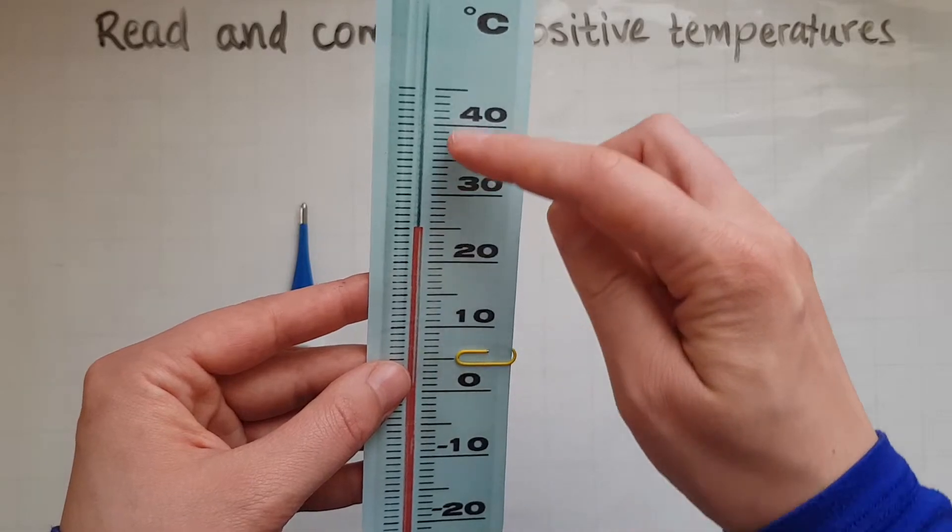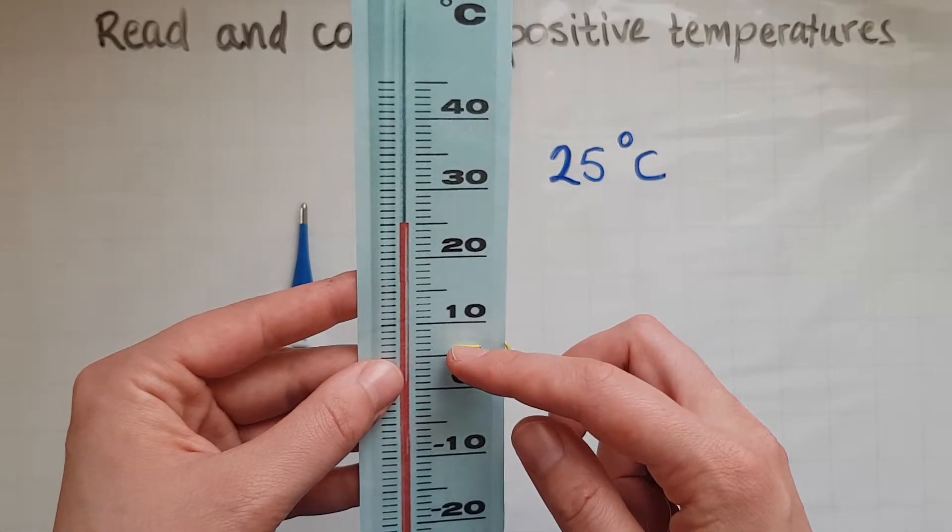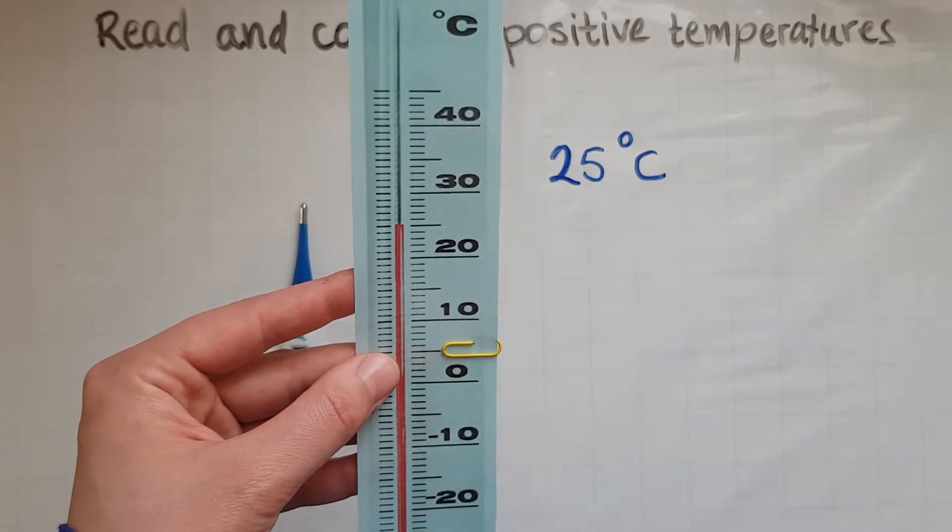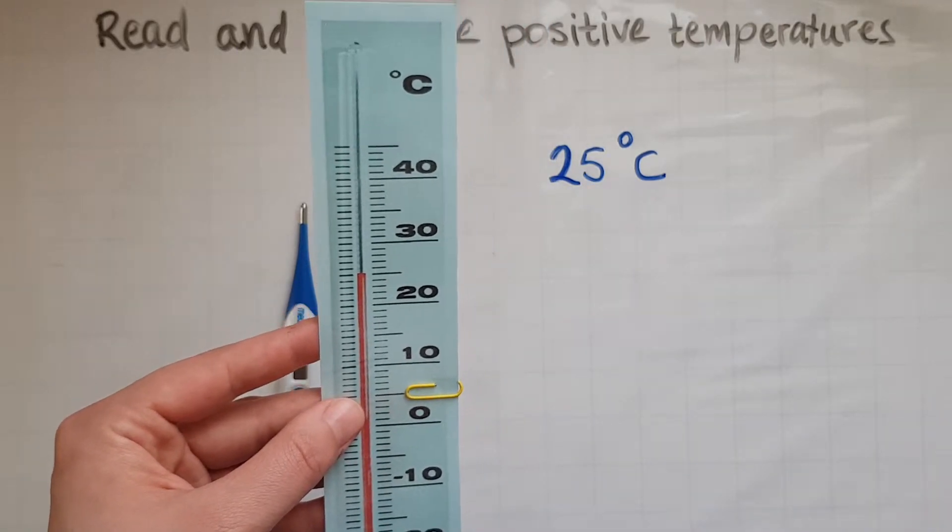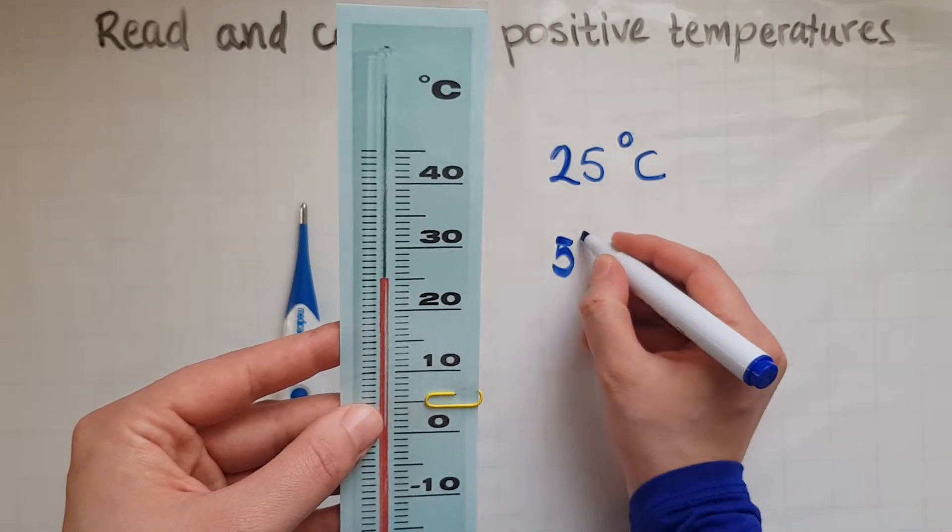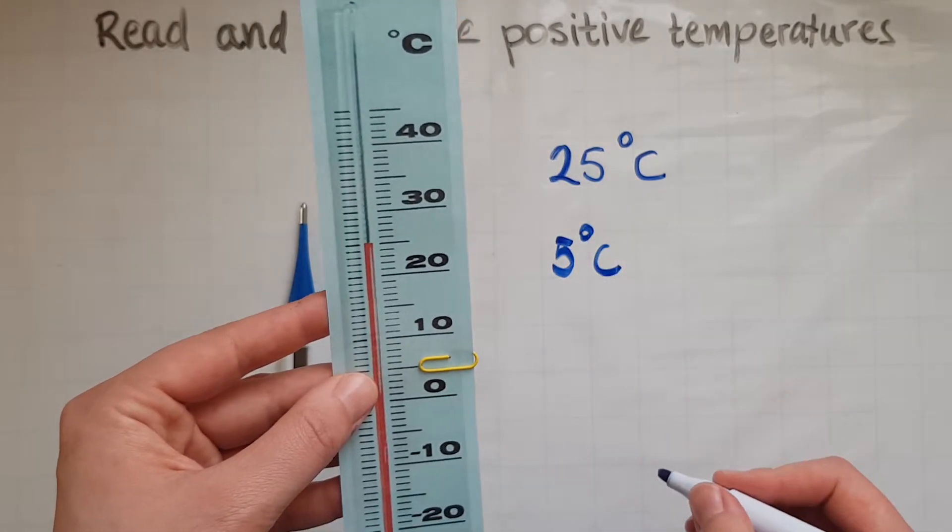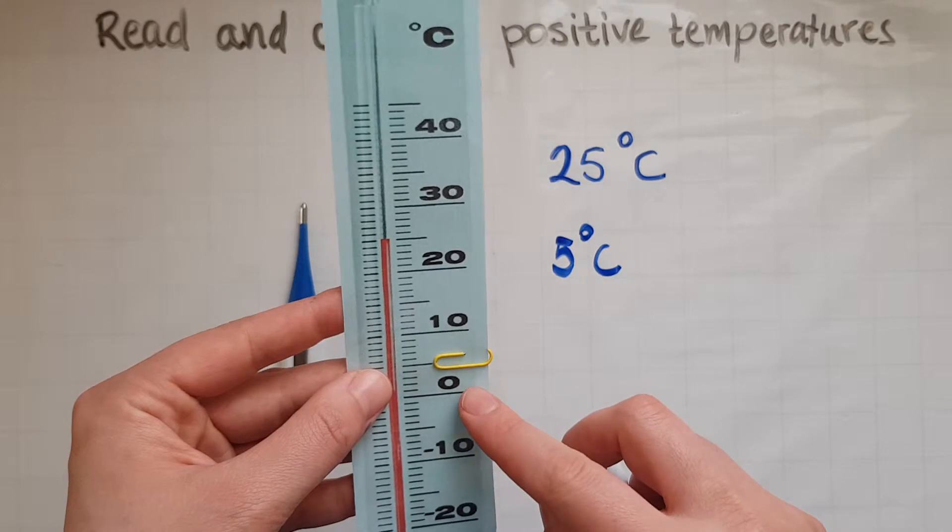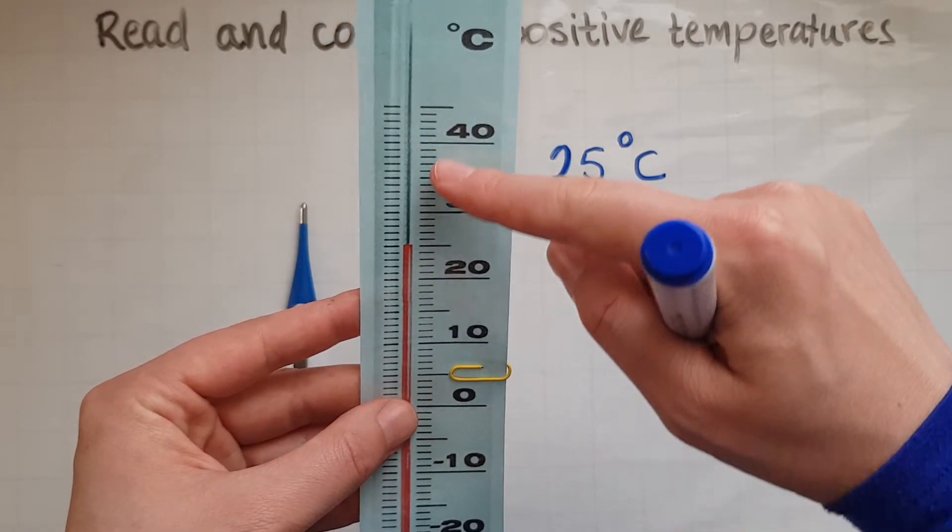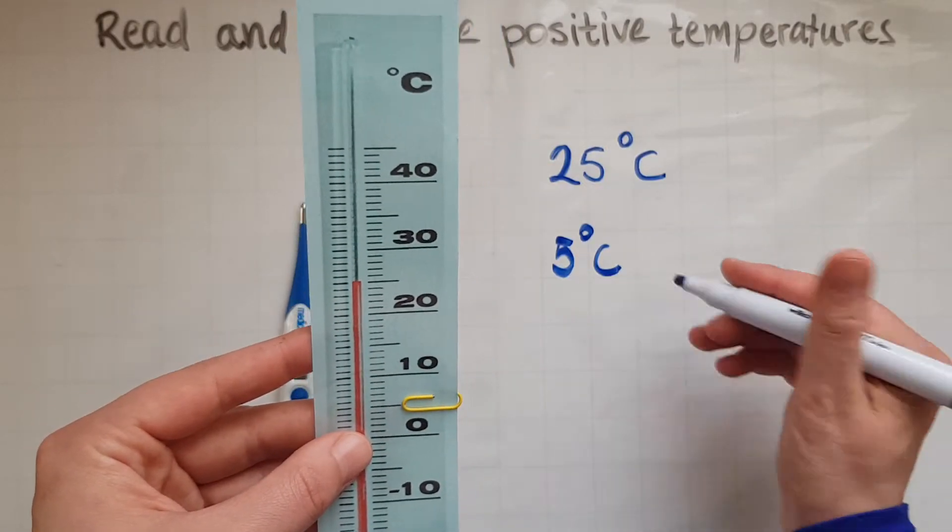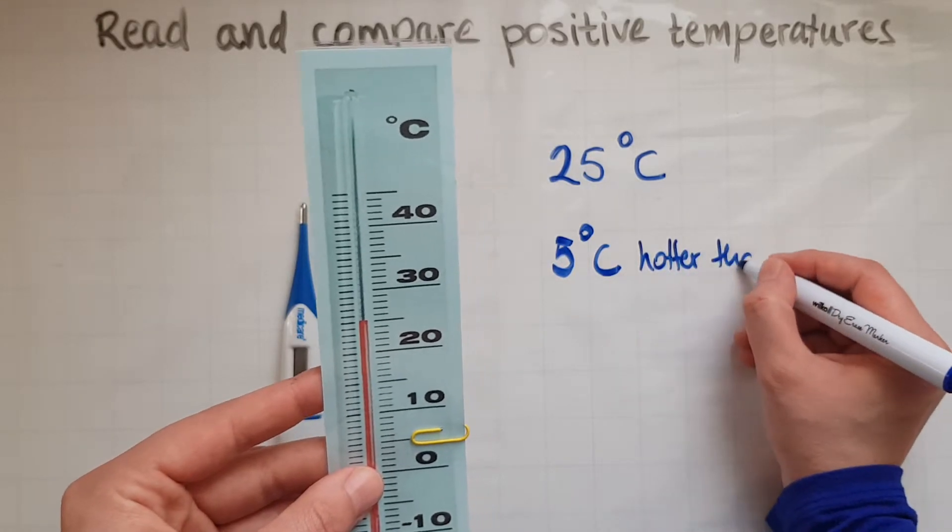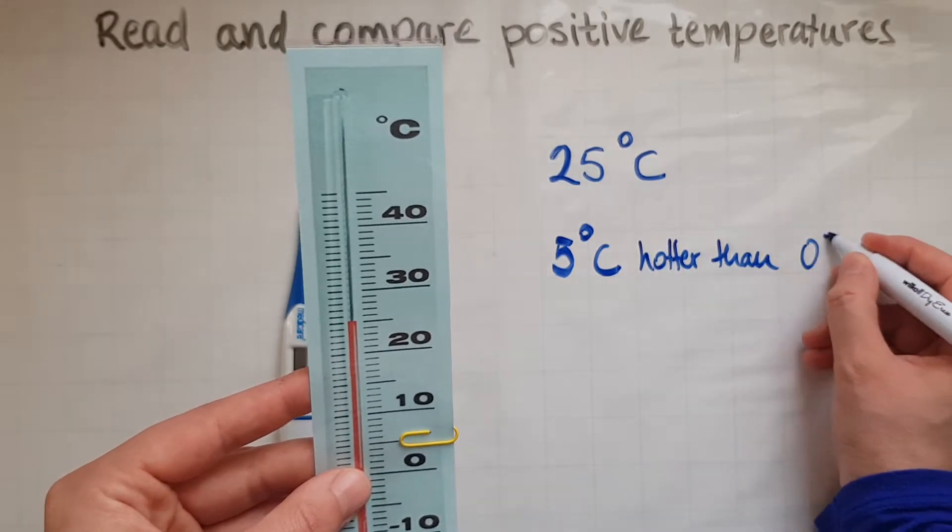So as you go up the temperature will be higher. So this is 5 degrees Celsius. And is that hotter than 0? Yes, because it's higher in the scale. So that is hotter than 0 degrees Celsius.